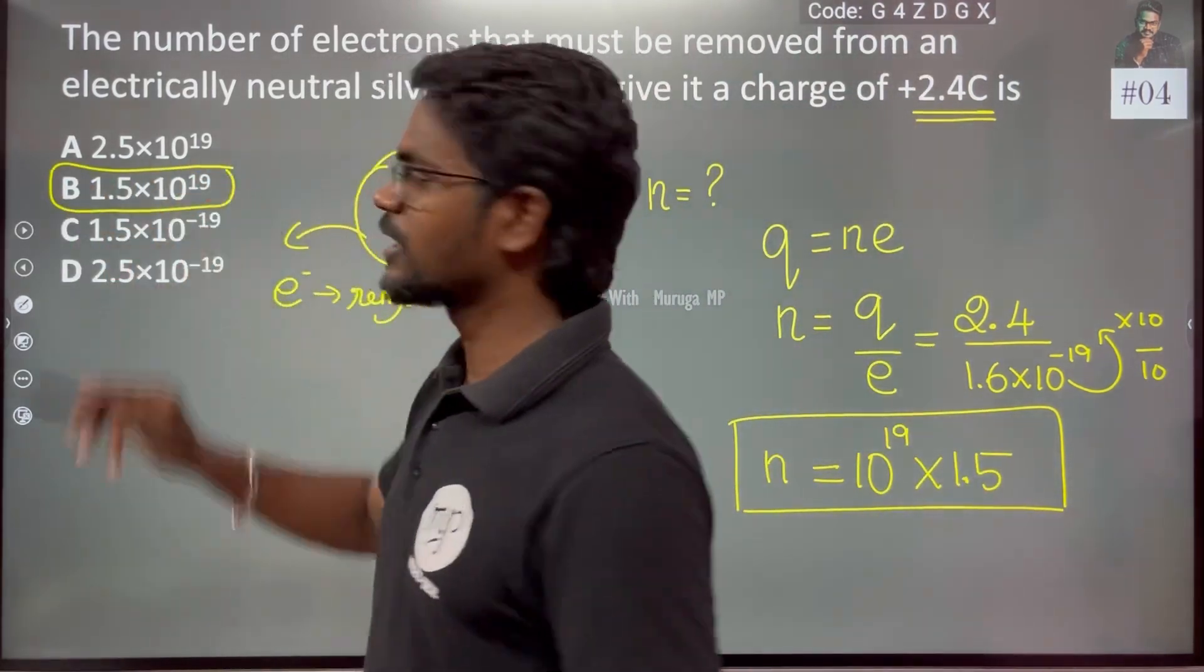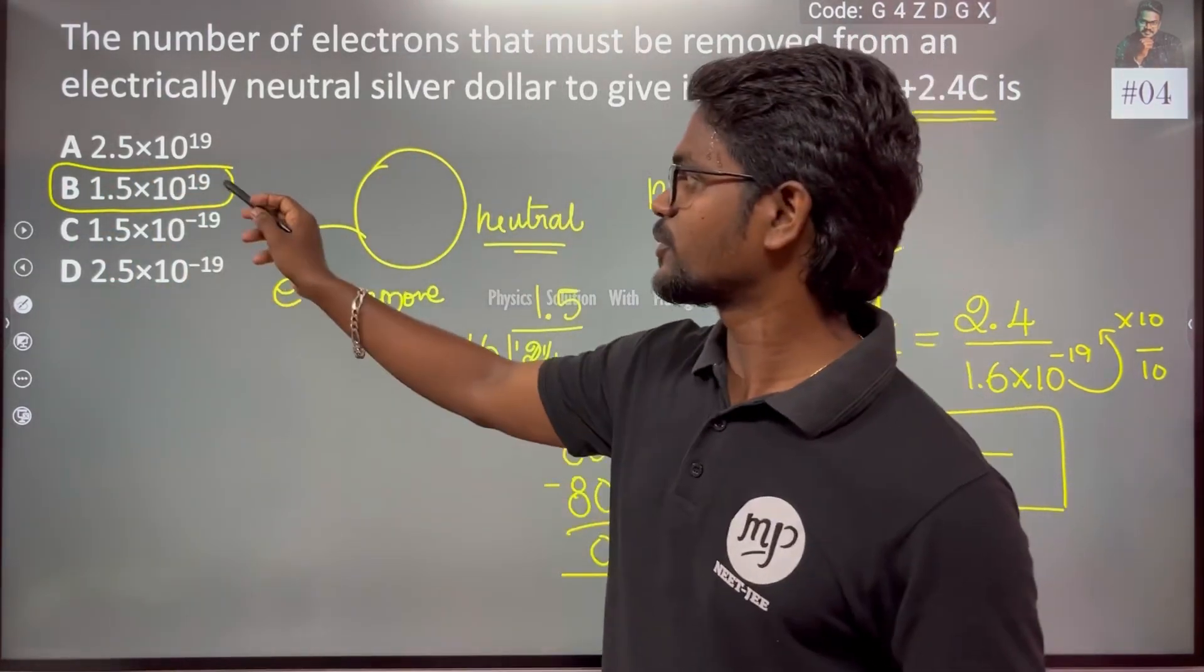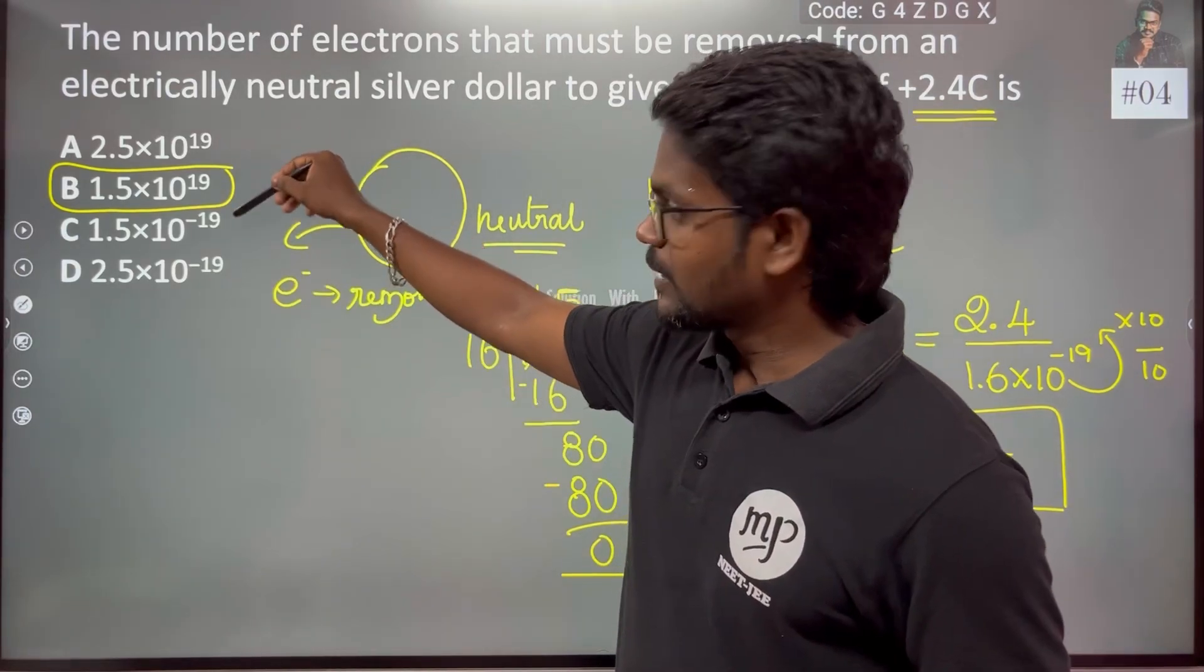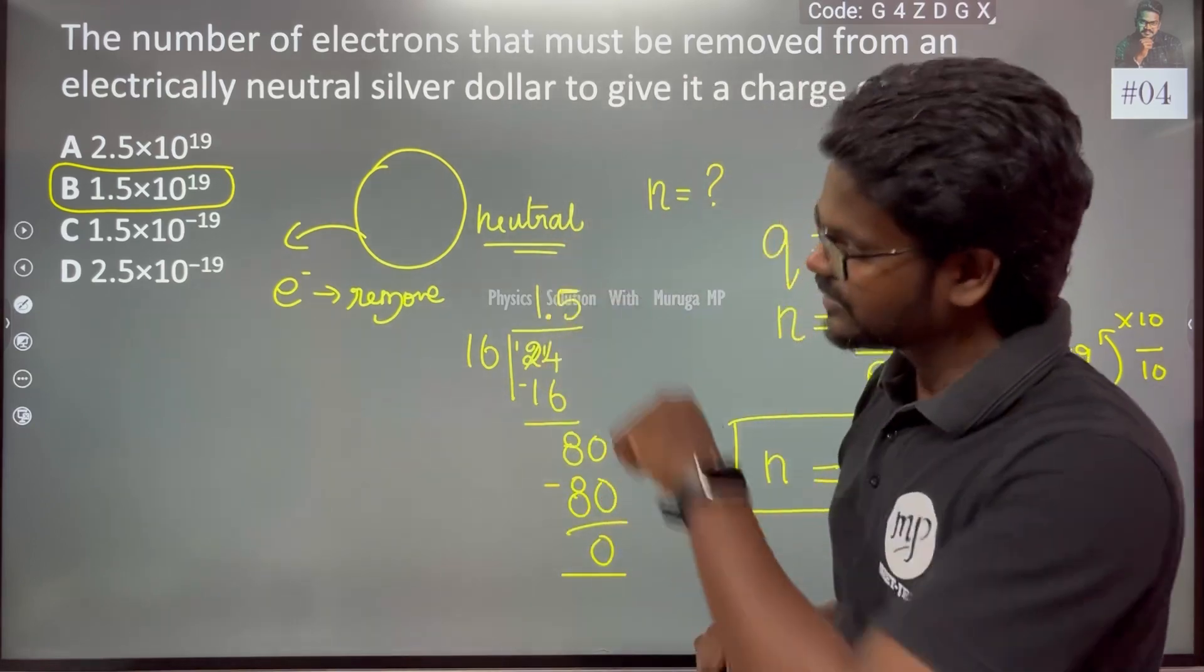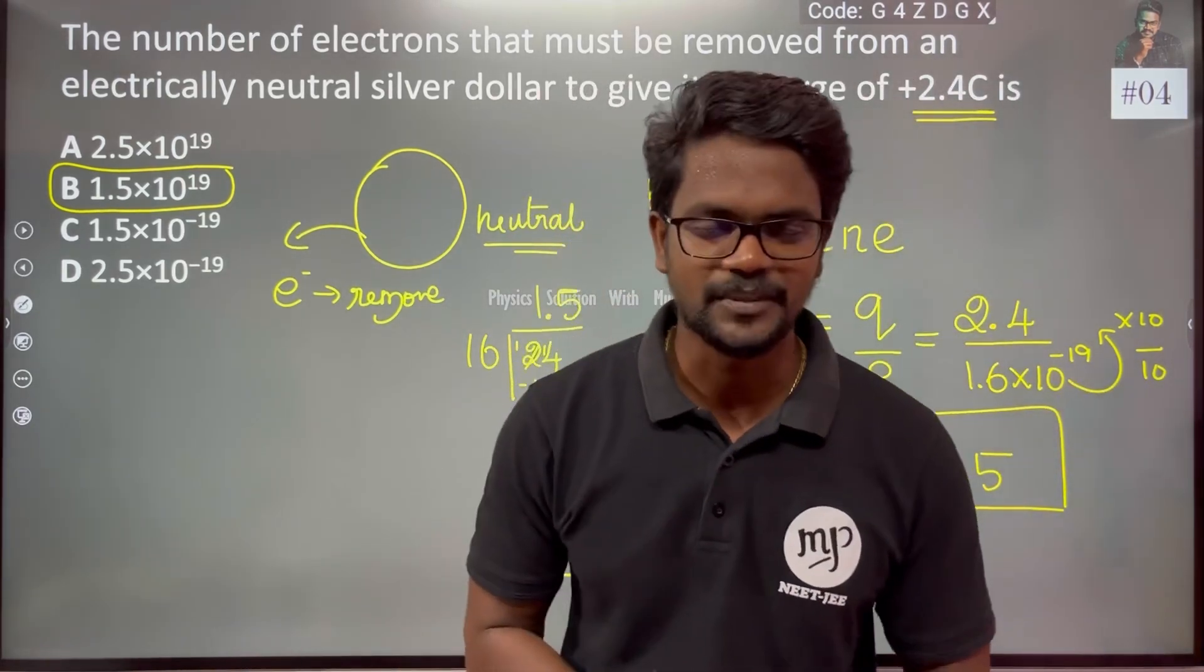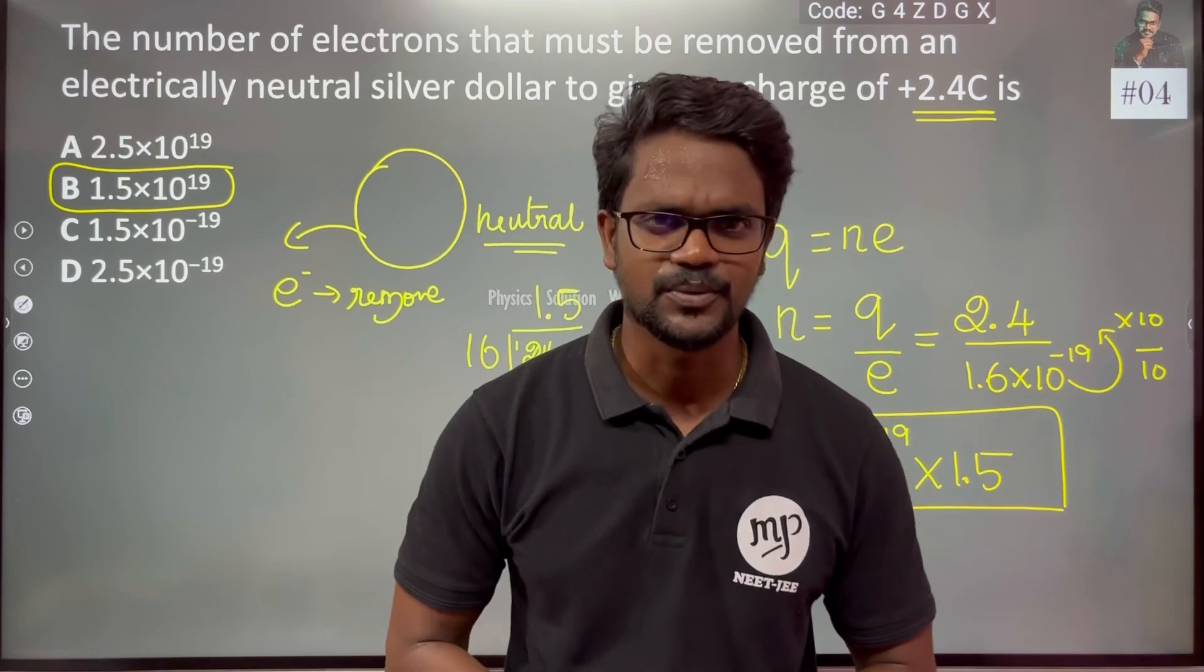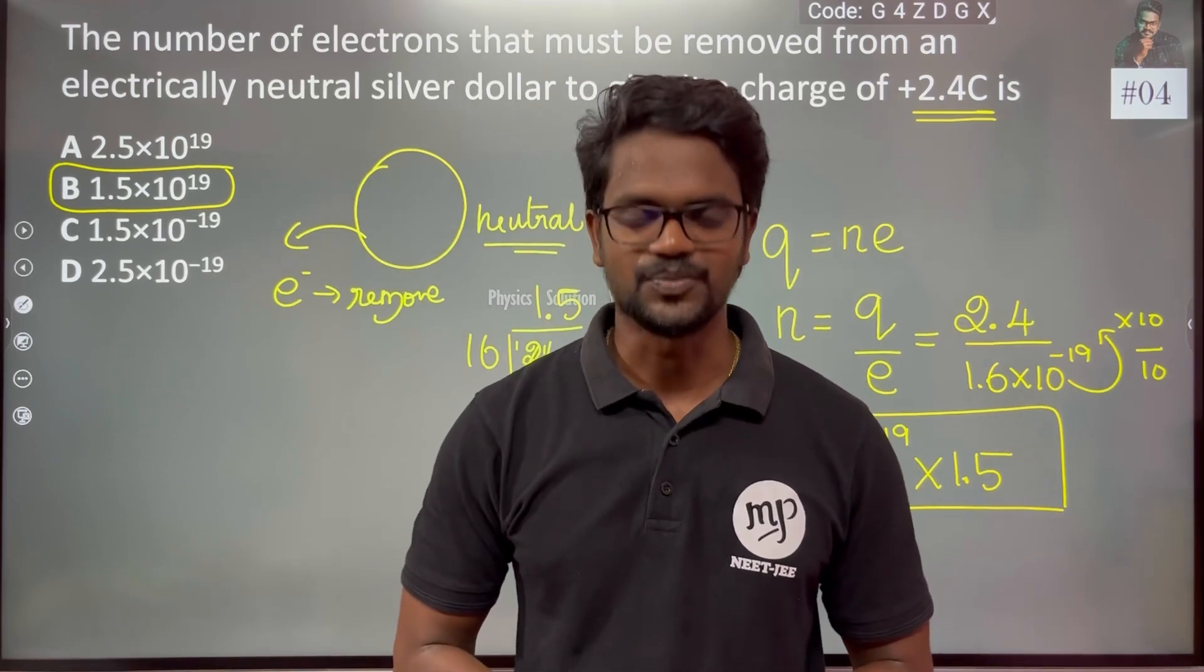You can see the option. 10 to the power plus 19 and minus 19. You have to be very careful while using the options. The answer is n. Thank you. Help this with a smile. Bye.